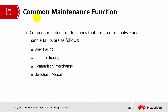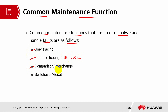What are the common maintenance functions? The common maintenance functions used to analyze and handle faults are mainly user tracing, to collect more information; interface tracing, where the type of interface can be S1 and S2; comparison and interchange at the hardware level, including some configuration changes, where we can compare data and try to interchange hardware; and the last one is switchover reset, which is more hardware related and related to the board itself.